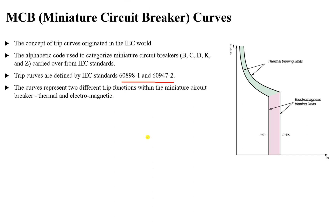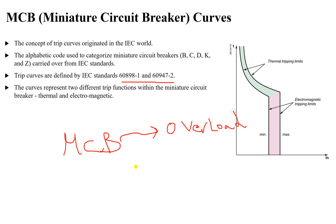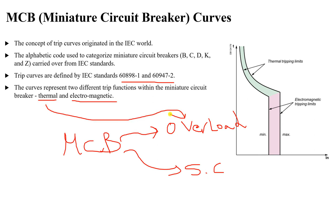These curves — B, C, D, K, and Z — represent curves with two trip functions. The miniature circuit breaker serves two functions: number one, protection against overload conditions, and number two, protection against short circuit. These two functions are defined by two mechanisms inside the miniature circuit breaker: a thermal mechanism and an electromagnetic mechanism. The thermal mechanism is associated with overload conditions, and the electromagnetic mechanism is associated with short circuit conditions.